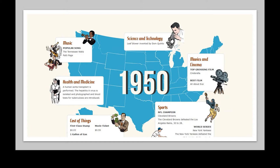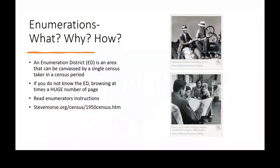In 1950, the leaf blower was invented — next time you're doing your lawn with your grandchild, tell them the leaf blower was invented 72 years ago. The Tennessee Waltz was popular music. The cost of the first stamp was $0.03, a movie ticket was $0.55. The Cleveland Browns defeated the Los Angeles Rams, the New York Yankees won the World Series, and Cinderella was the top grossing film. All this is about creating family history and what happened in 1950 when you discover those names.